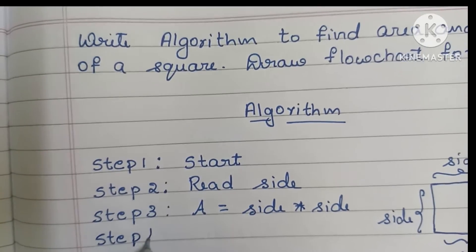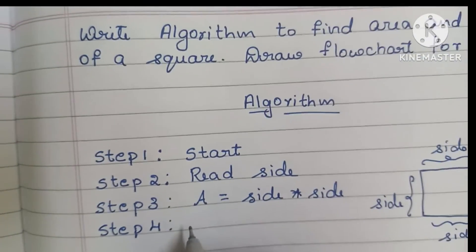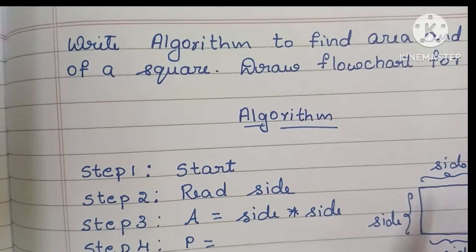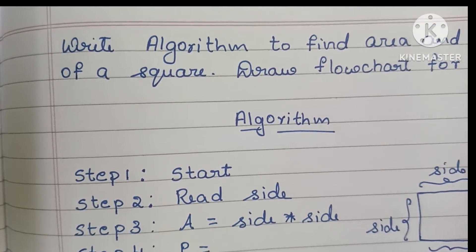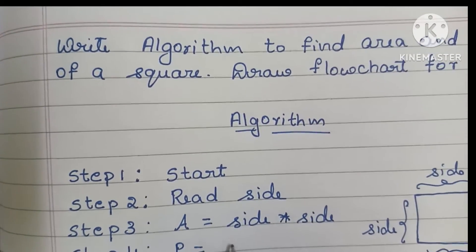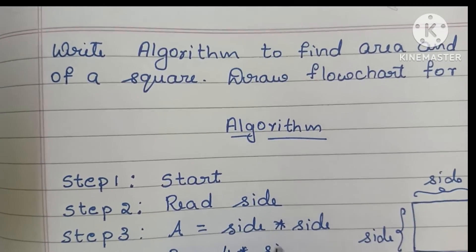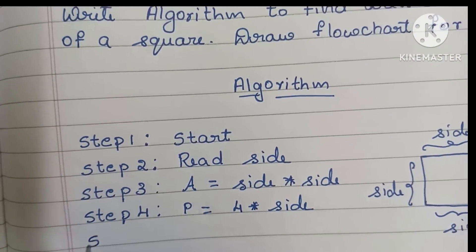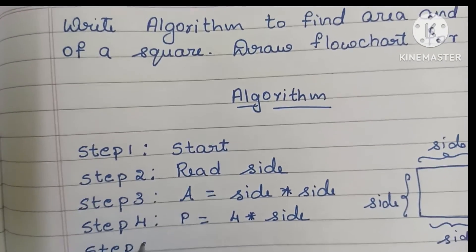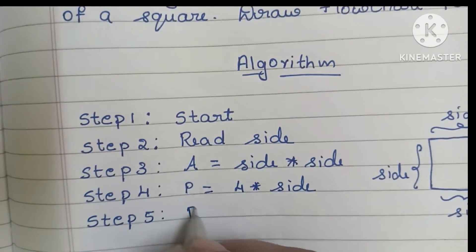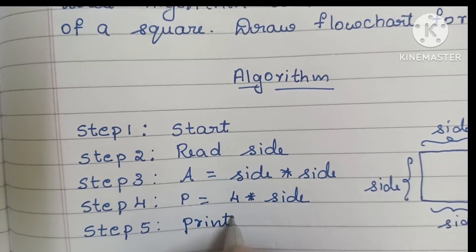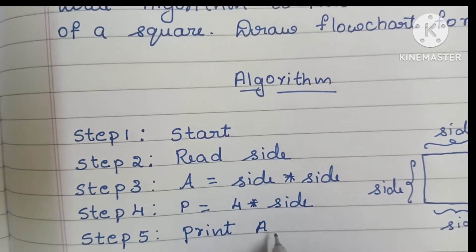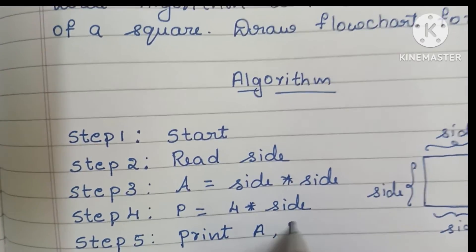In step four we have to find the perimeter of a square. That is P = side + side + side + side, which equals four into side. In step five we have to print the output values — print area and perimeter of a square, that is print A, P.